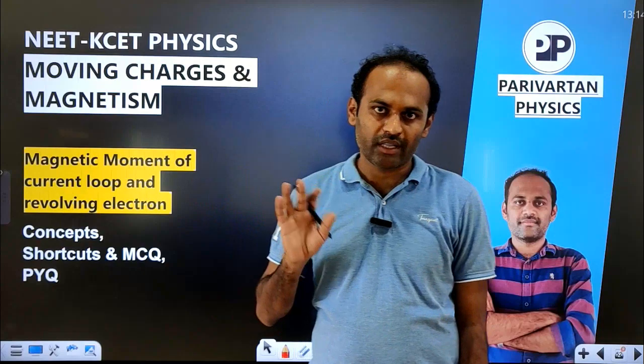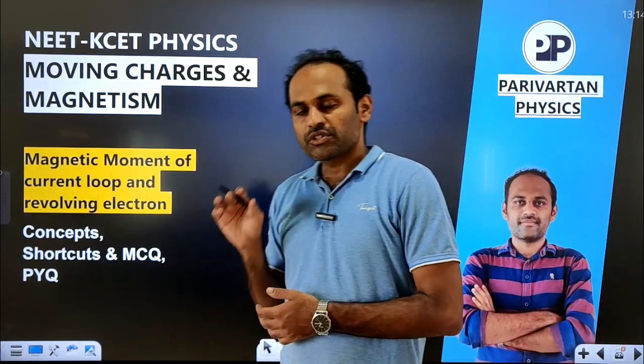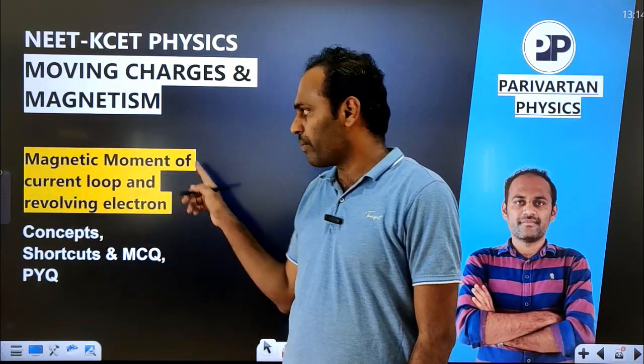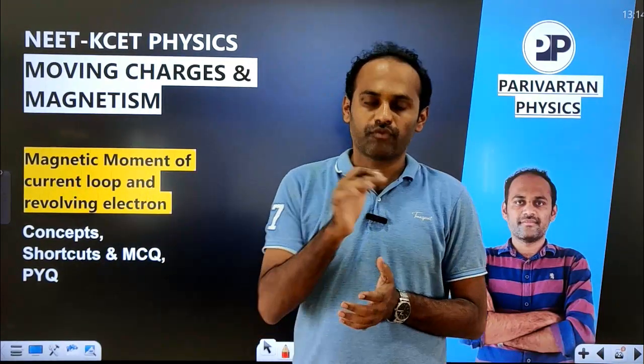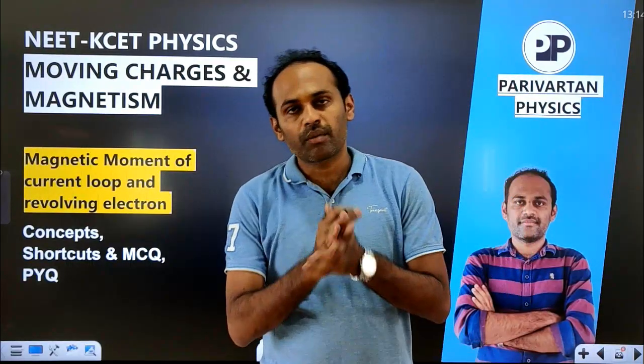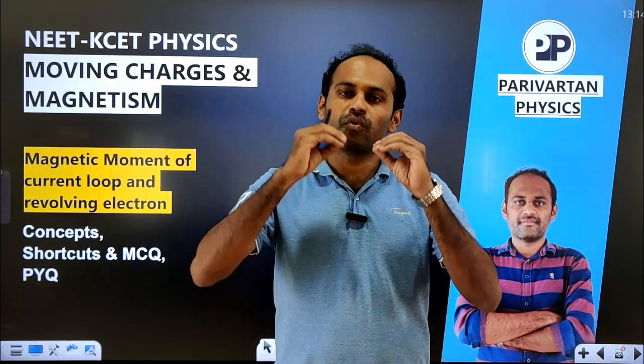Each chapter has already six or seven videos uploaded. This is the eighth video. In this video we are going to study the concept shortcuts as well as MCQs related to the concept of magnetic moment of current loop and revolving electron — concept formulas as well as objectives we are going to solve. Those who are preparing for NEET as well as KCET, these videos are made especially for them. So if you are willing to crack NEET as well as KCET Physics with a very good score, these videos will help you to a very good extent.